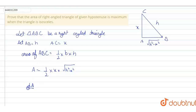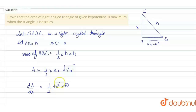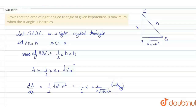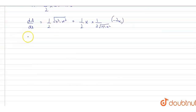dA with respect to dX equals — here we have to differentiate this product, so we apply the product rule. We get 1 by 2 times under root of H squared minus X squared, as differentiation of X is 1, plus 1 by 2 times X into differentiation of under root of H squared minus X squared. So we get: 1 by 2 under root of H squared minus X squared plus 1 by 2 X into minus 2X upon under root of H squared minus X squared.